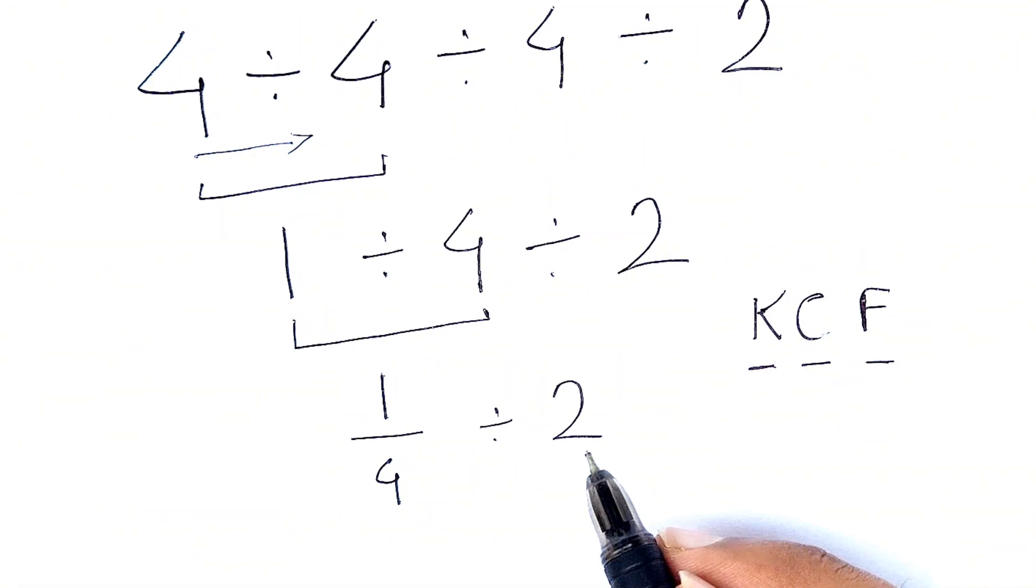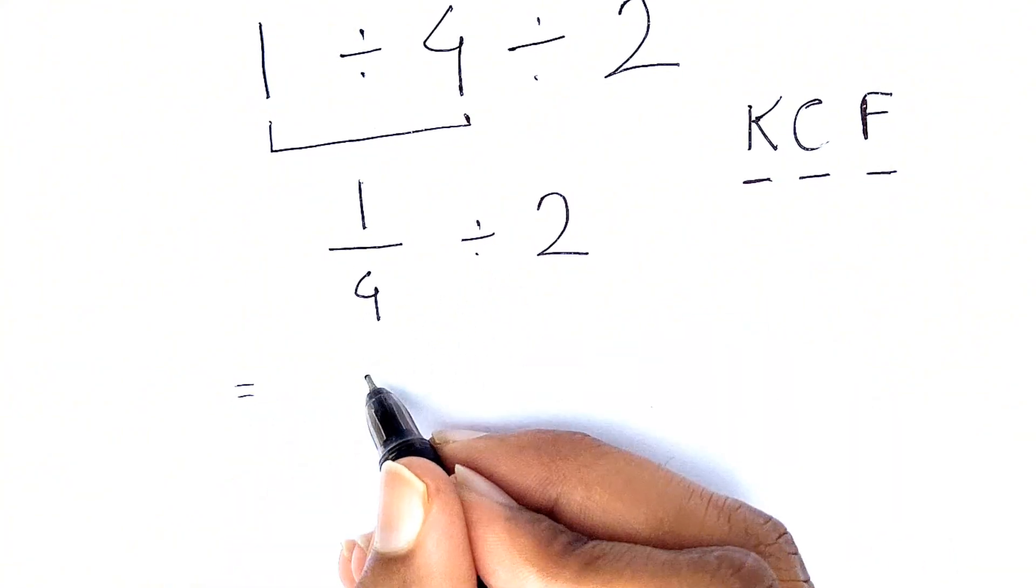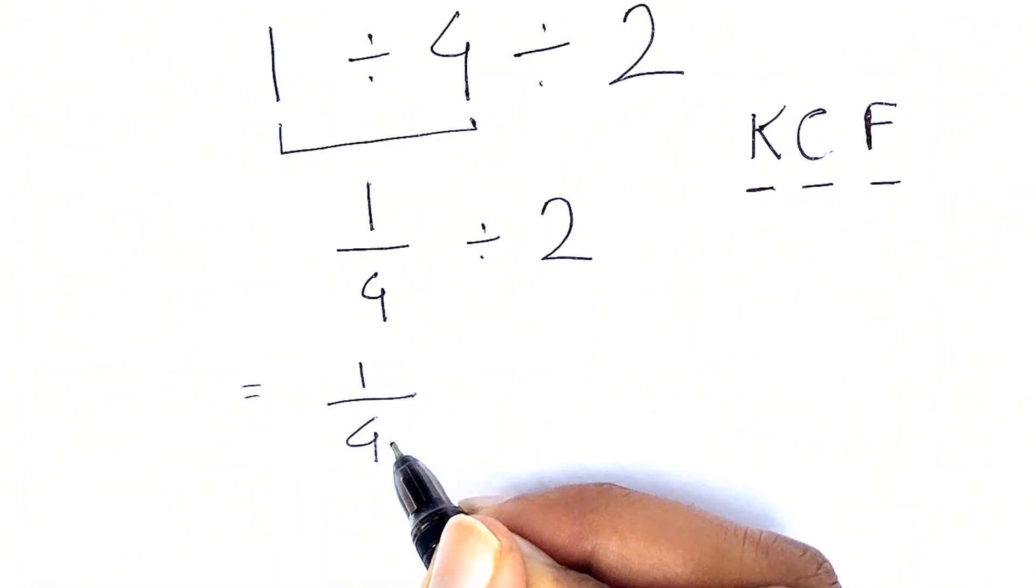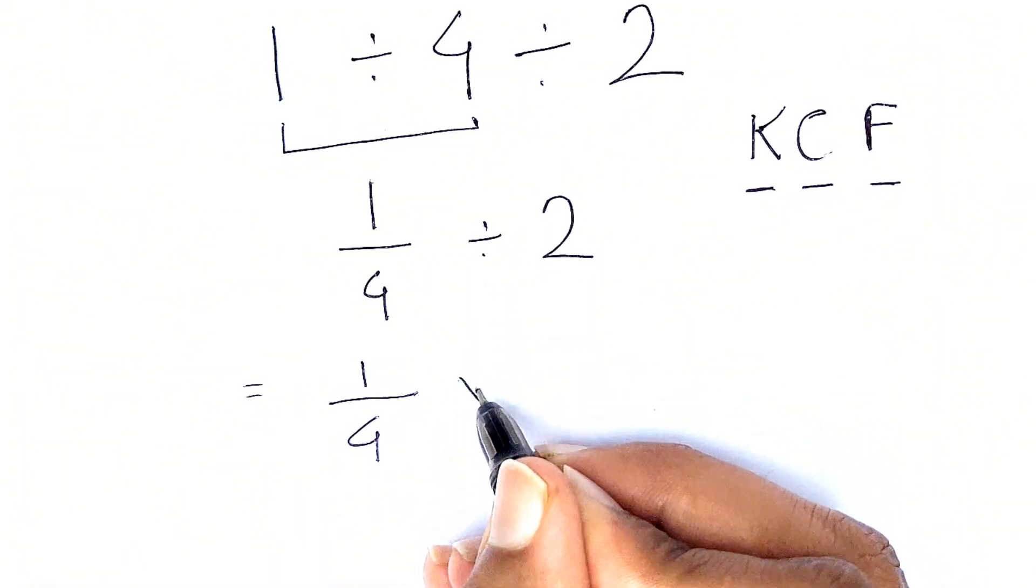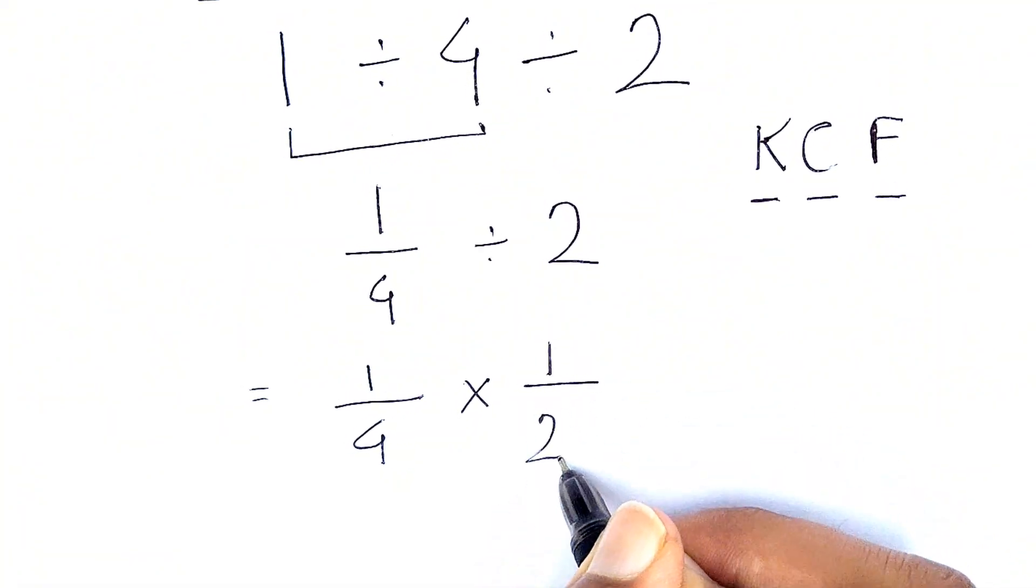So let's find out how we can implement this in our expression. We'll write 1 over 4 as it is, then we'll change the division sign into multiplication, and we'll flip this 2 that gives us 1 over 2.